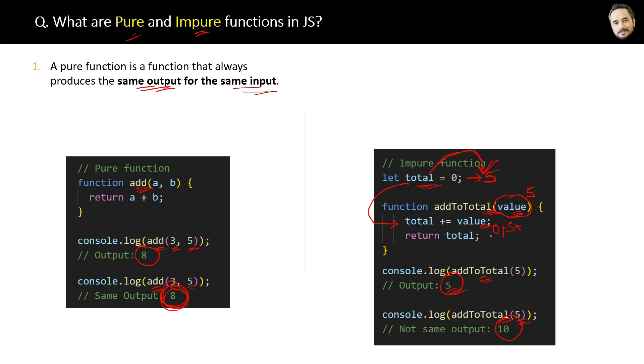Therefore, now total equals total plus 5, which means total equals 5 plus 5 equals 10, and the output is different this time.